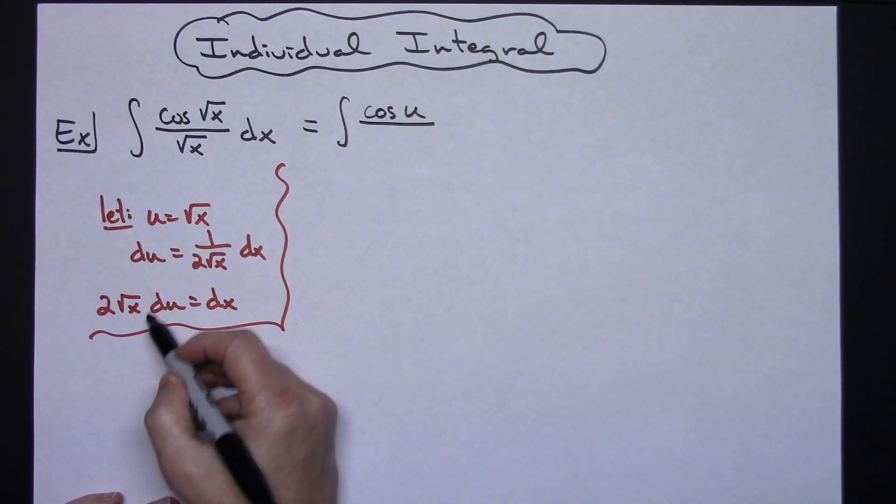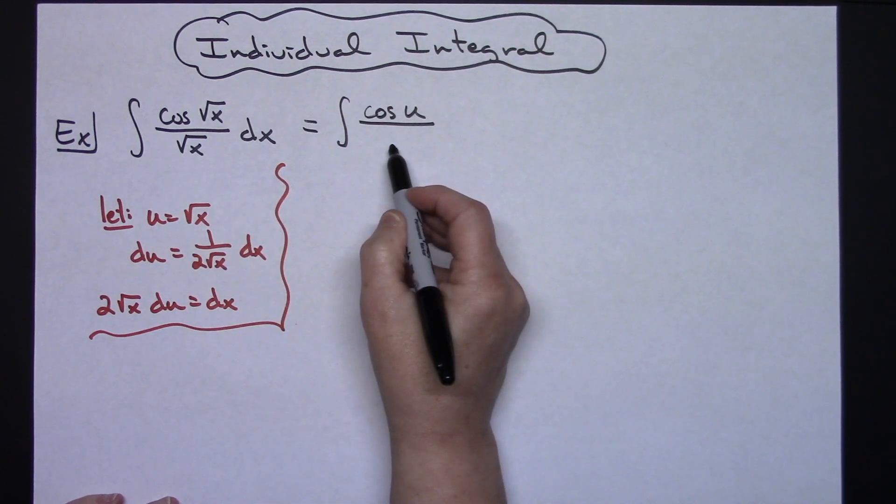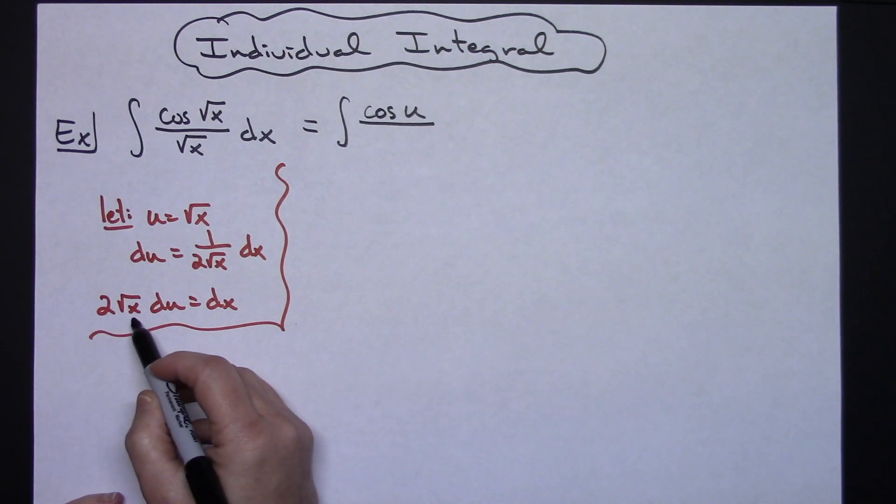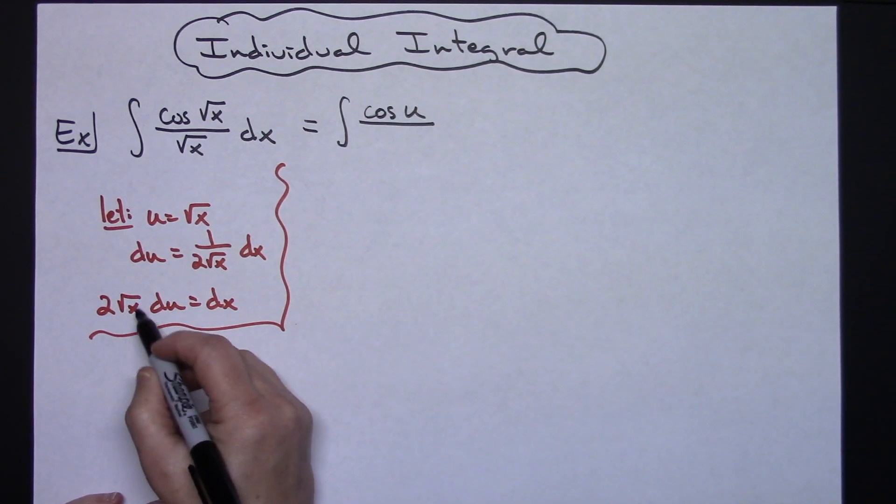Now we can go ahead and substitute square root of x for u here on the bottom. But when we substitute for our dx we'll have a 2 square root of x du. We'll have that leftover square root of x so then we would have to put u back in for there.